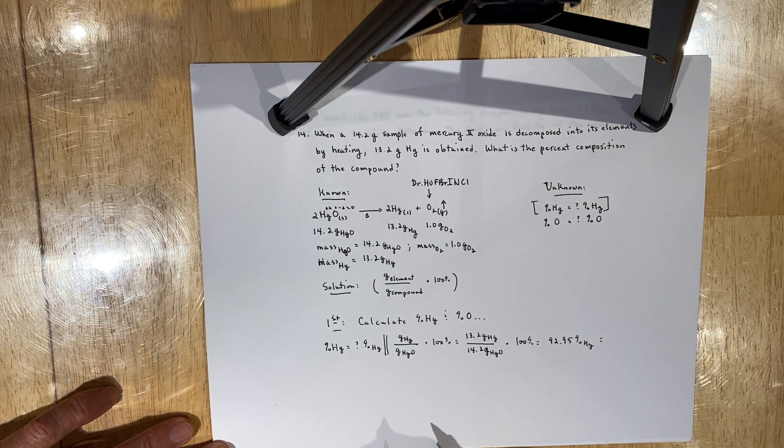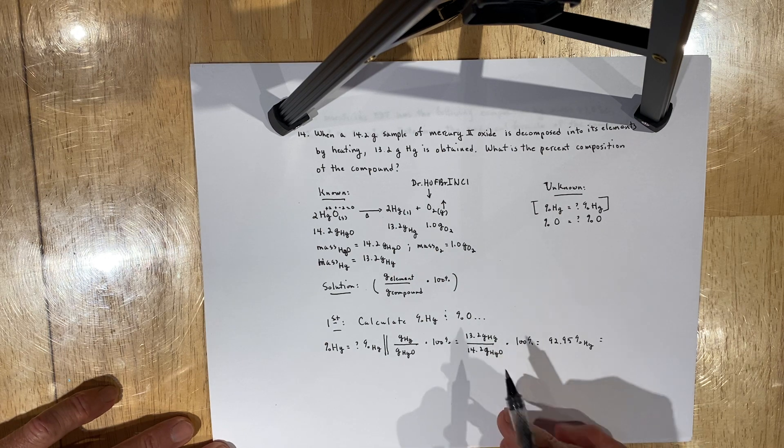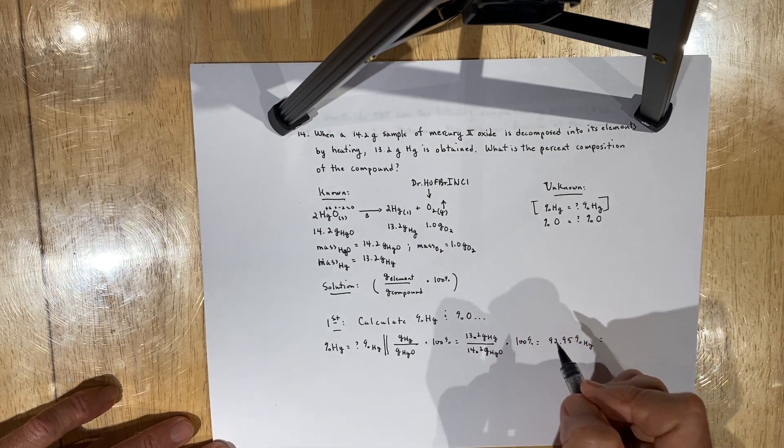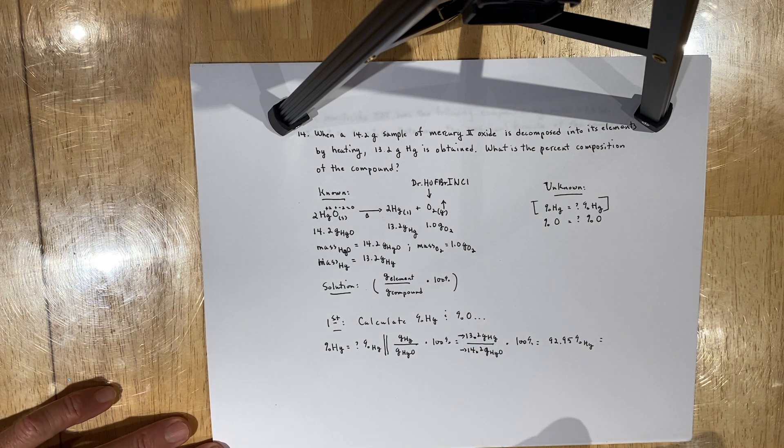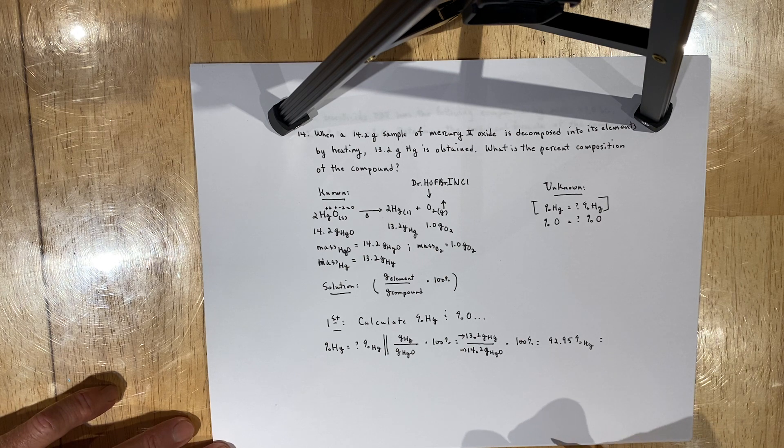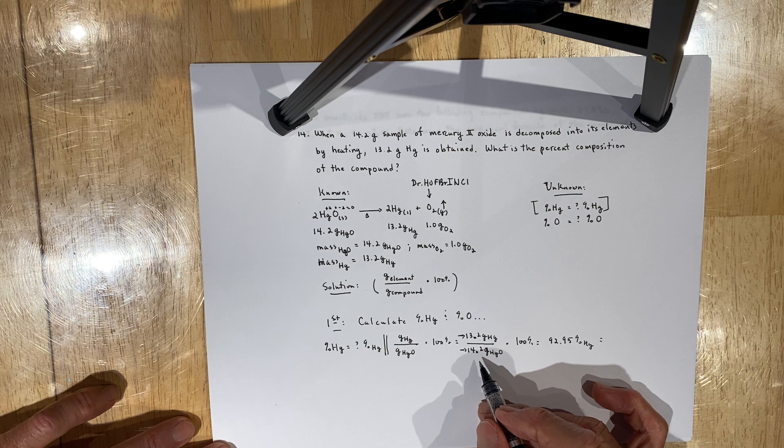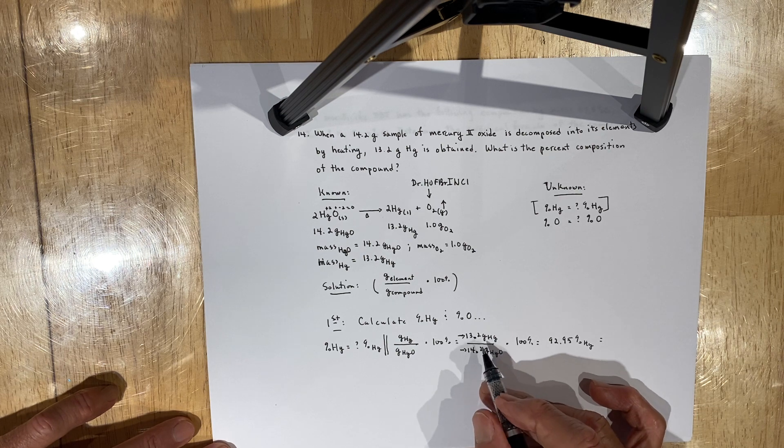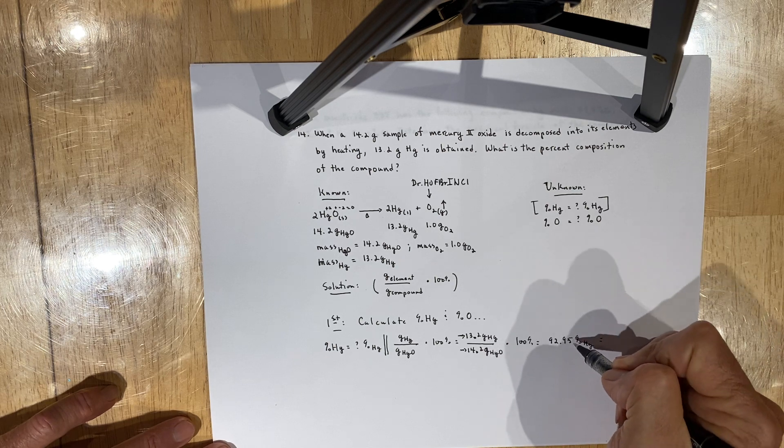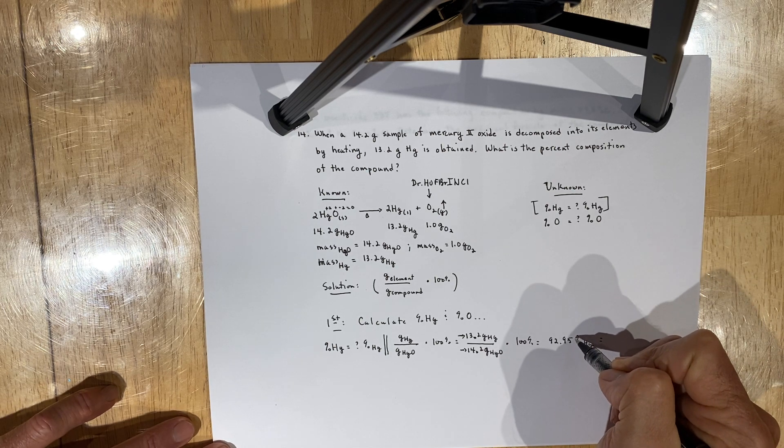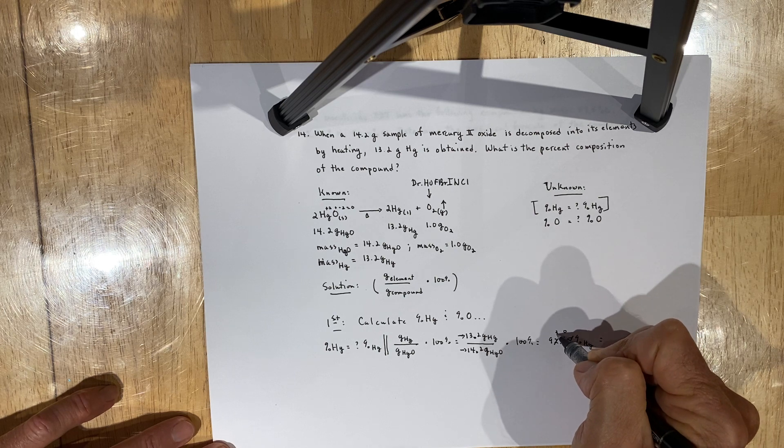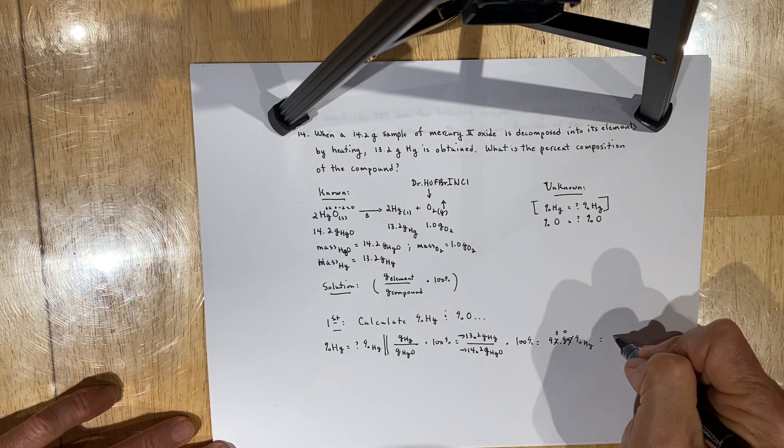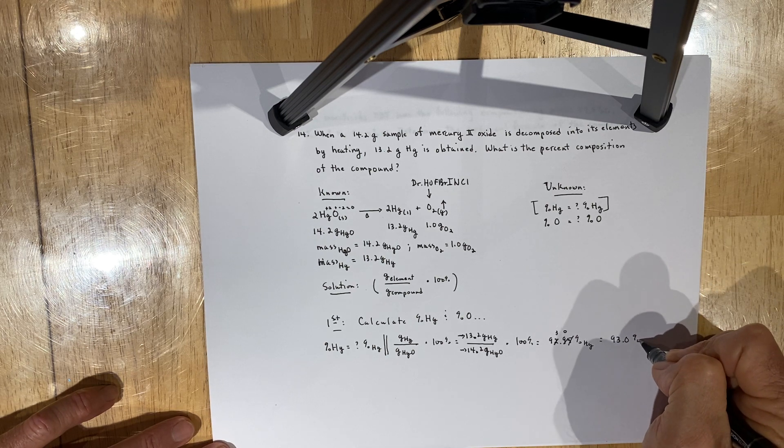And that being said, the mass measurements both have three significant figures because the decimal point is present. And again, you draw an arrow from the Pacific side until you get to the first non-zero digit. Every digit thereafter is significant. So your answer should have the same level of precision as the least precise measurement in your problem. In this case, we're dividing and multiplying. So therefore, we have to keep track of sig figs. So in essence, we can drop the five. The nine rounds up to a zero, which rounds the two up to a three. So our answer essentially is going to be 93.0% mercury.